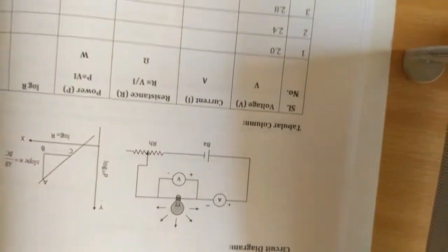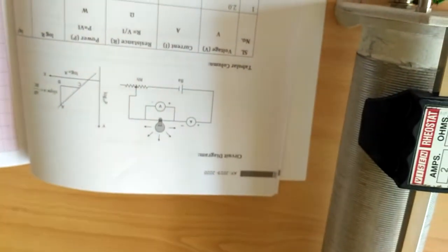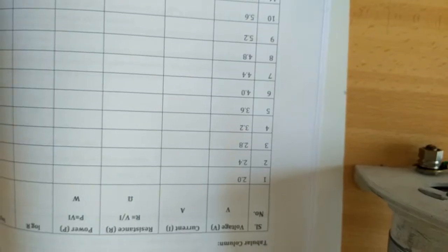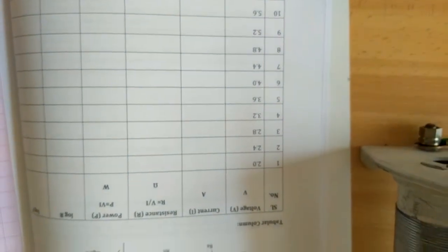We will connect the circuit, vary the voltage across the circuit, and measure the current. For different voltages from 2 to 6 volts we will measure the current.